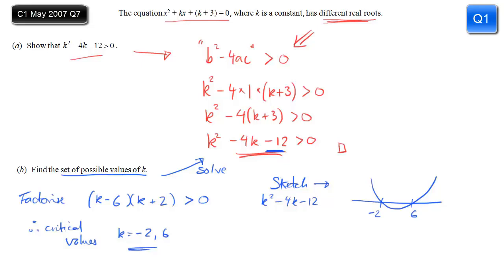And looking at the inequality, the factorised version, I want the bit where it is greater than 0, so that whole expression is greater than 0. That corresponds to the bit that's above the horizontal axis. So that bit there and that bit there, those are the bits that I want to include. So really it's everything to the right of 6 and everything to the left of minus 2. So I can express that as an inequality by saying k is less than minus 2, or k is greater than 6. And that is my solution.